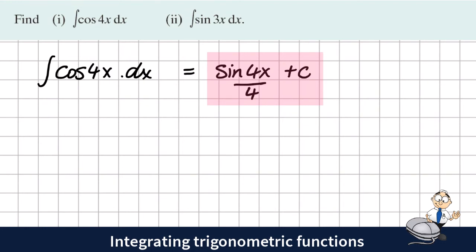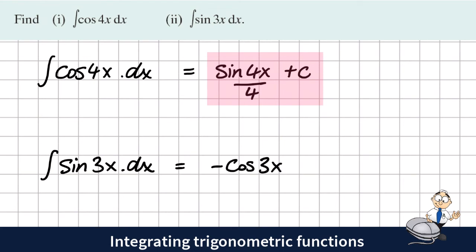The second question is very similar. We're asked to integrate sine of the angle 3x dx. When we look up in the Formulae and Tables, we see that the integral of sine of an angle would be negative cosine of that angle. Because this angle is 3 times x, we need to divide by 3, plus c, the constant of integration.